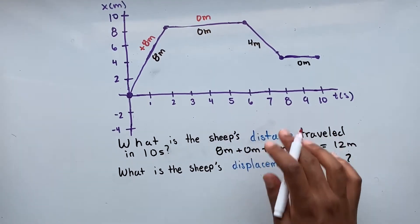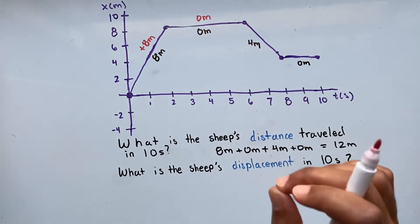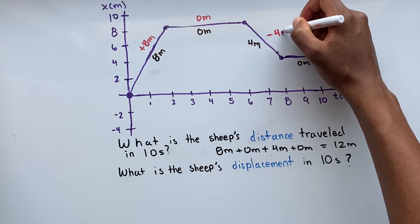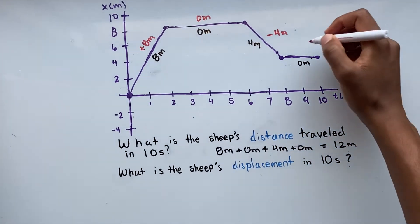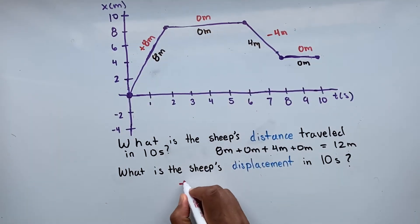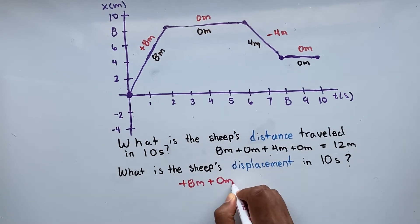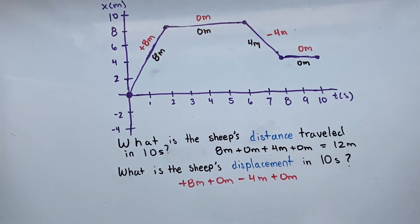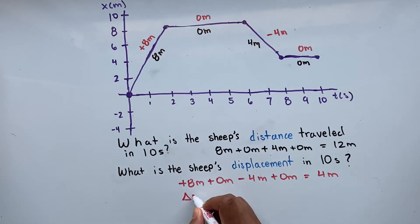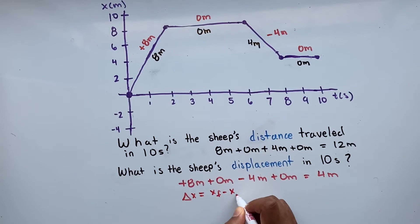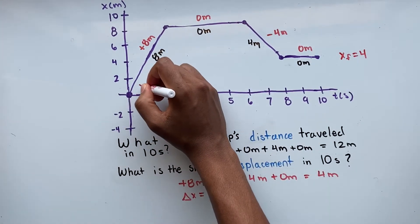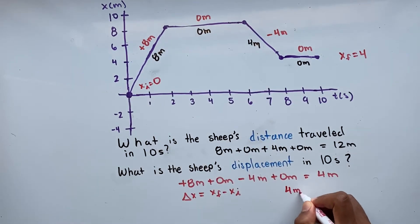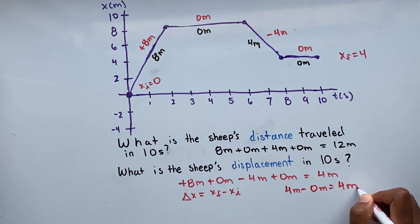From 6 to 8 seconds, our sheep changed its position from 8 to 4, and since we're taking into account the direction the sheep traveled, our displacement is negative 4 meters. From 8 to 10 seconds, our sheep remained at position 4, so displacement is 0 meters. Adding: positive 8 plus 0 minus 4 plus 0 gives us 4 meters for our displacement. We can also use the formula delta x equals final position minus initial position: 4 minus 0 equals 4 meters. Either method works.